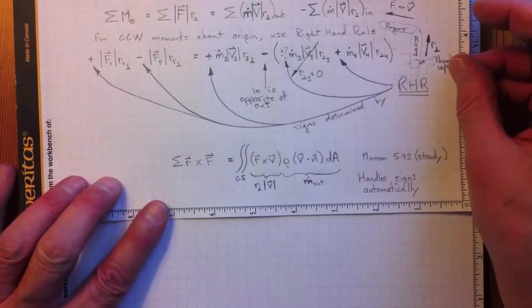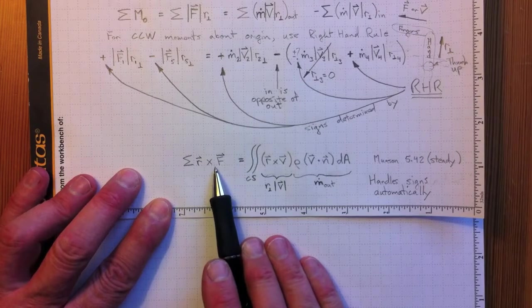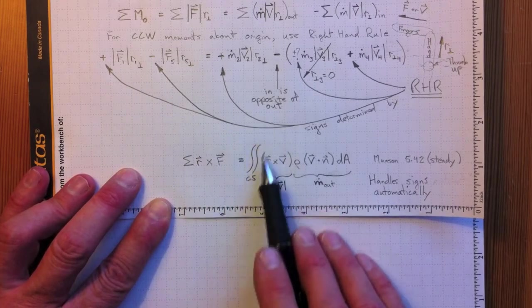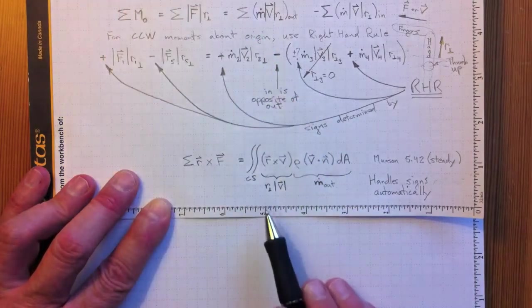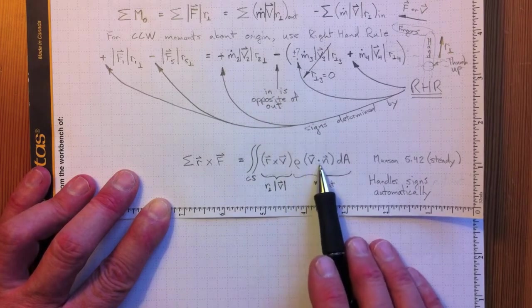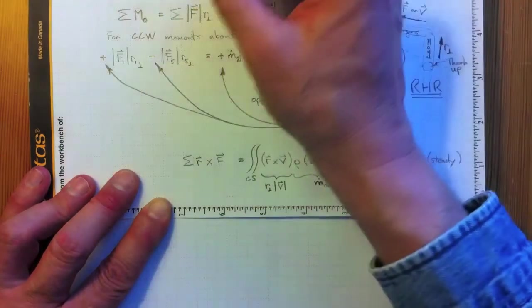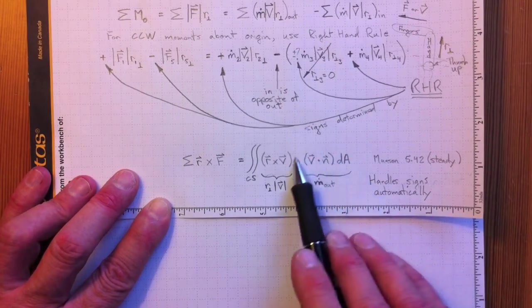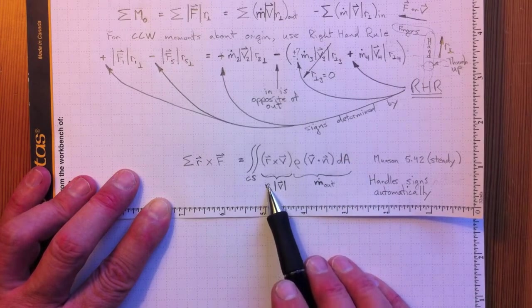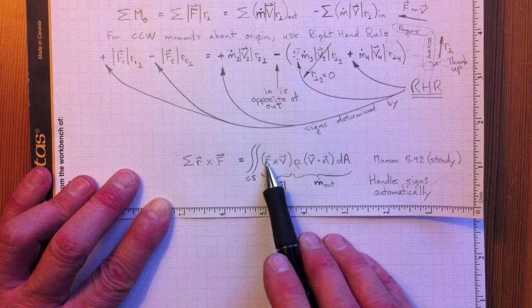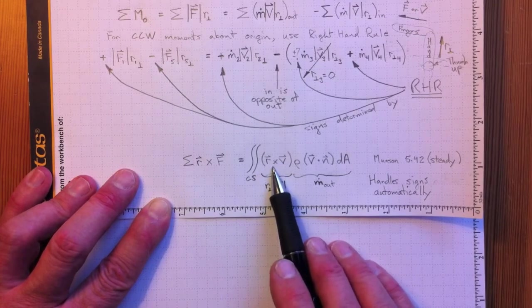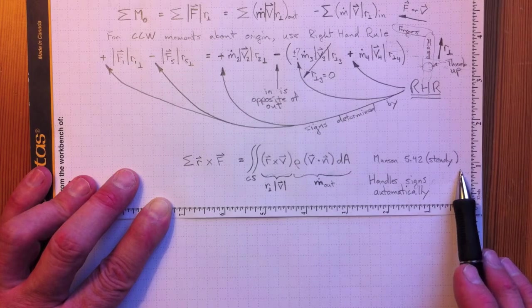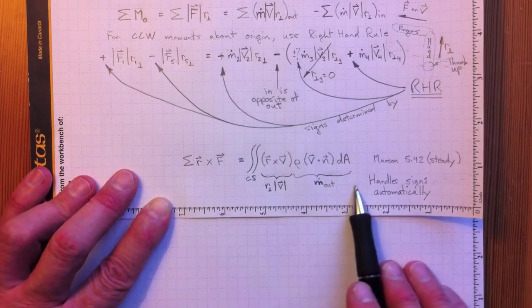Now if we took that same system and looked at the cross product of the radius vector and the force vector, that's F1 R1 perpendicular. If we integrate it over the control surface of the entire system, the in versus out sign would be taken care of by V dot N, which is positive for a velocity vector going out of the control volume and negative for a velocity vector going into the control volume. So this is the mass flow out through a small element of area. And this is the perpendicular radius times the velocity vector magnitude with its sign adjusted to account for whether it's clockwise or counterclockwise, all taken care of by the cross product here and the cross product here. So this is Munson's equation 542 for a steady situation. And it handles the signs automatically, but mathematically it's a little more complex.